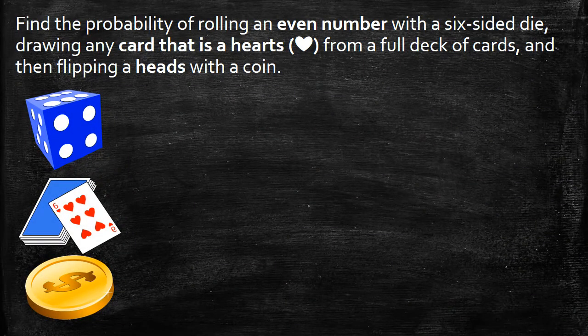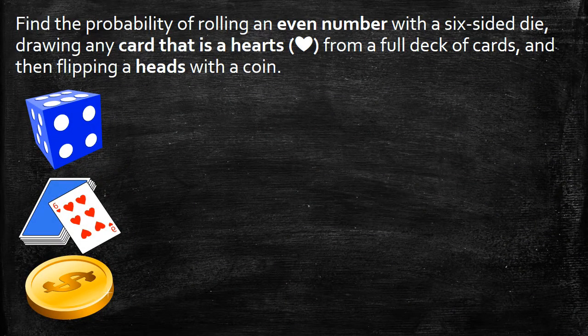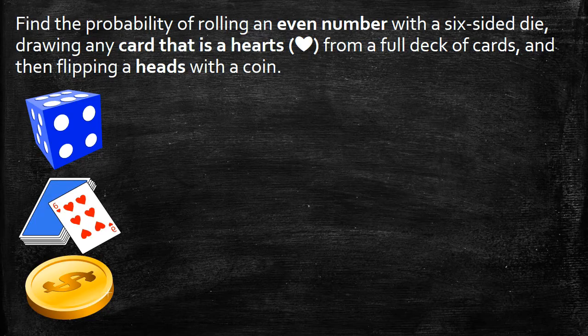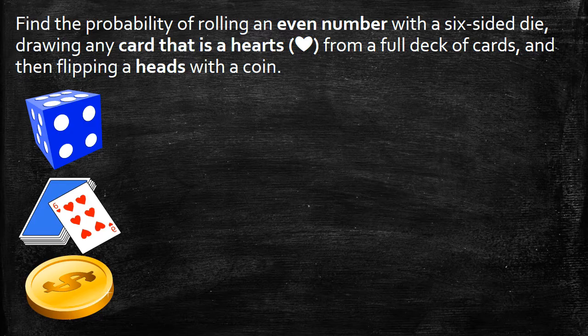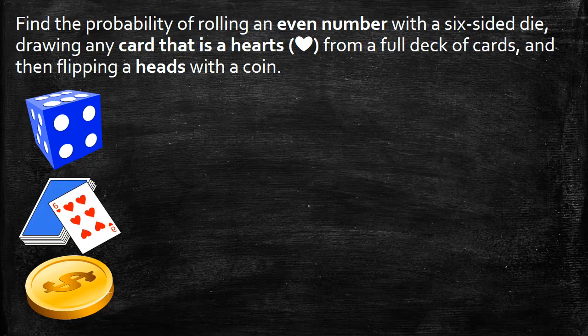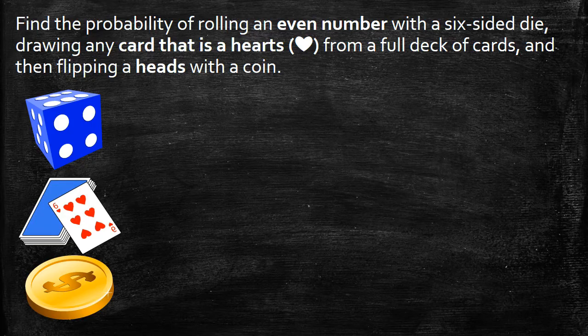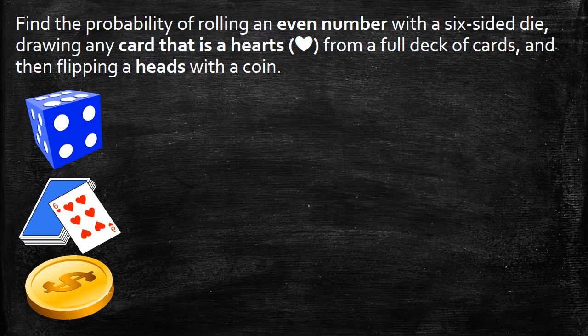Now we take this a little bit further. We can look at events with three or more. You could even do up to 100. You could do as many as you want events, as long as they are independent events, events that don't matter to each other. So we're going to look at this example. We're going to find the probability of rolling an even number on a six-sided die, drawing any card that is a heart from a full deck of cards, and then flipping heads with a coin.